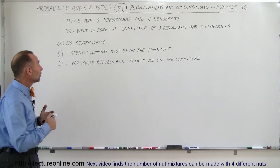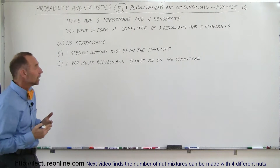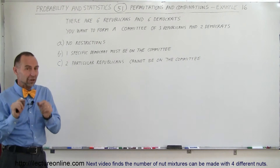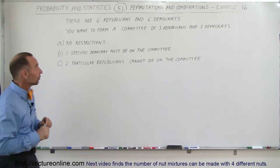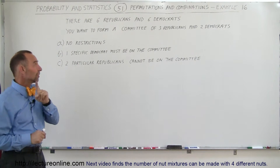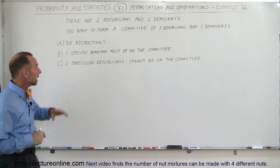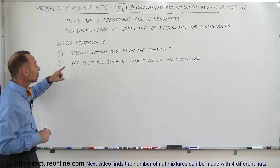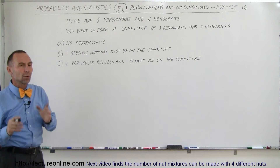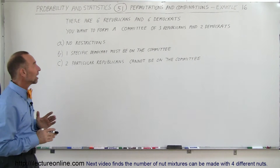If there are no restrictions, what are the number of combinations? The order doesn't matter, so we are looking for the number of combinations. For Part B, if there's one specific Democrat that must be on the committee, and for Part C, there are two particular Republicans that cannot be on the committee — what will be the number of combinations in each case?